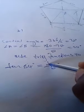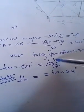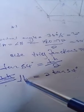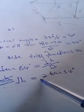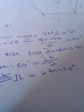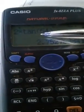Tan 54 equals the perpendicular height. Making the perpendicular height the subject of the formula, the perpendicular height equals 2 times tan 54. On your calculator, 2 times tan 54 equals 2.75. So the perpendicular height is 2.75.